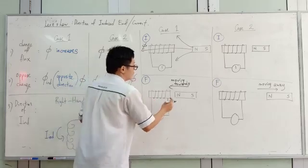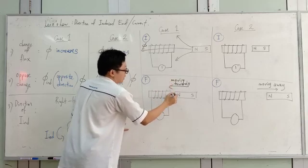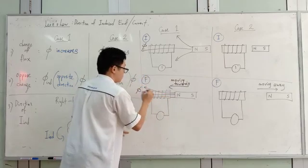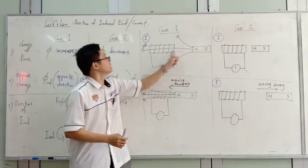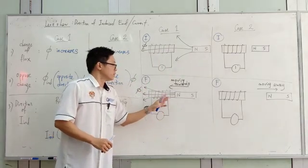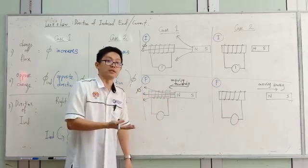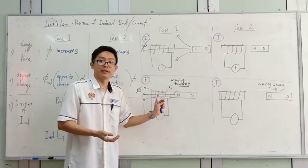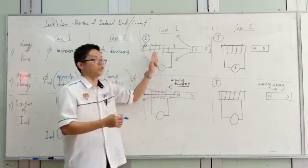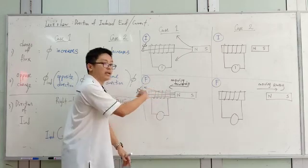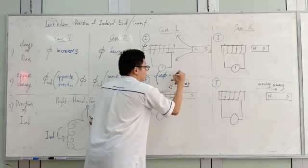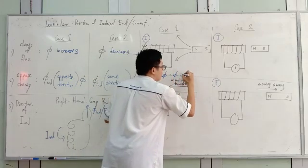Now this magnet is moved towards the coil. Initially, just one field line passes through the coil, but now the magnet is nearer to the coil, so the magnetic field passing through it becomes stronger. What happened to the flux? The flux has increased. There is a change in flux between the initial and final states — the flux passing through the area has increased.